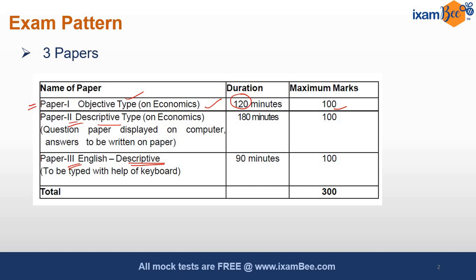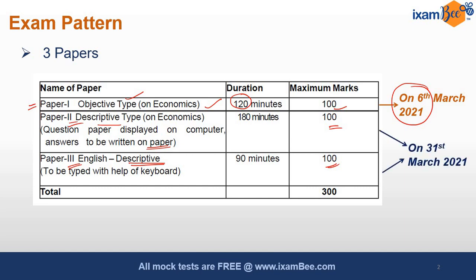In Paper 2, questions will be displayed on the computer screen but you will have to write the answers on a piece of paper — this is 100 marks, totaling 300 marks. Paper 1 is on 6th of the marks, so right now your focus is on the objective exam, and then you have the descriptive exam.